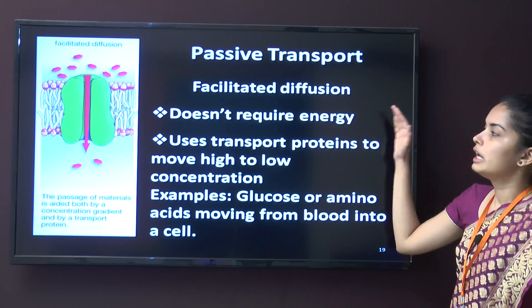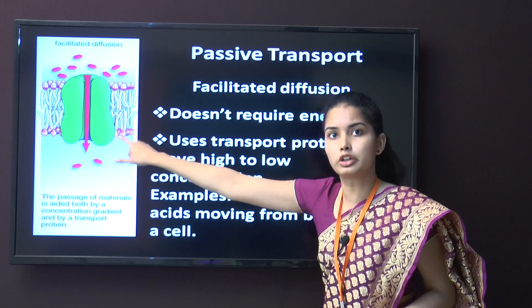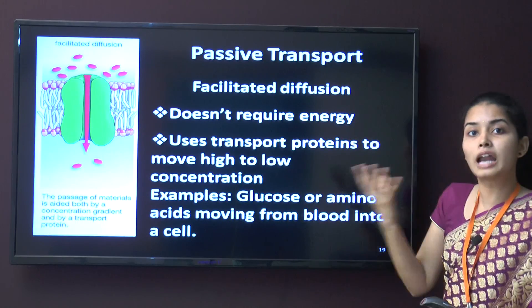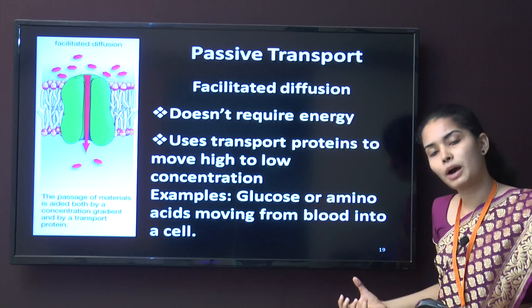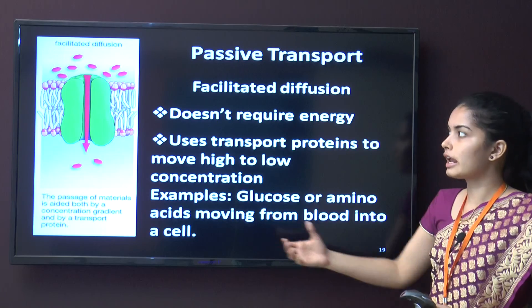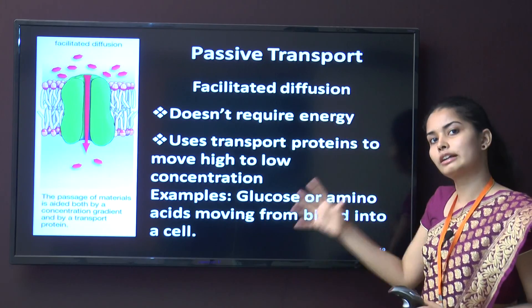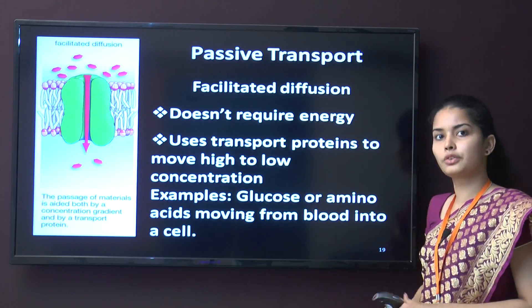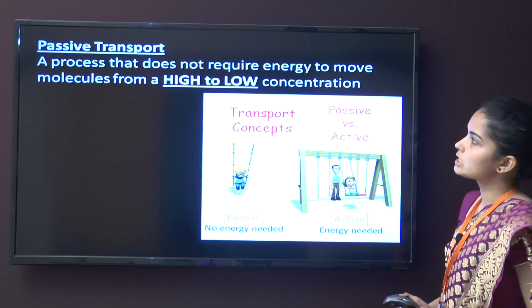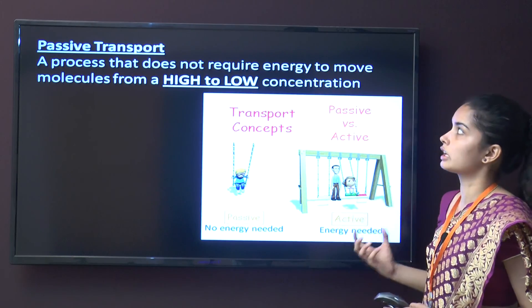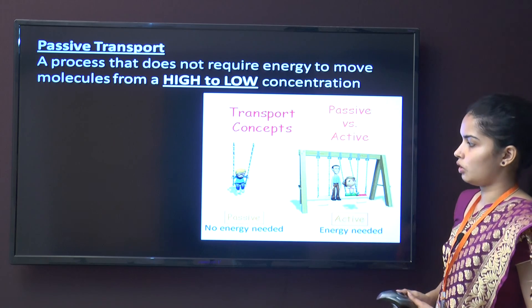Facilitated transport is a passive transport that does not require energy but requires a protein molecule, so that larger substances such as glucose and amino acids can pass through. They cannot easily diffuse through the plasma membrane directly, so they require a transport protein to pass through. Passive transport is a process that does not require energy to move molecules from high to low concentration.